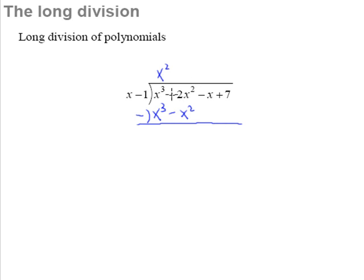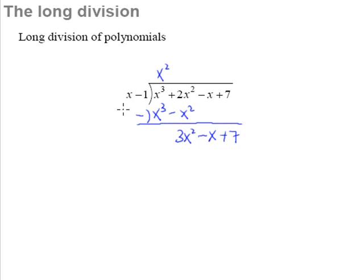This x cubed minus x cubed gives nothing — no more x cubed. Then 2x squared minus negative x squared gives a positive 3x squared. Like in primary school long division, we bring it down and continue the process again. Now something multiplied by x must give me 3x squared.